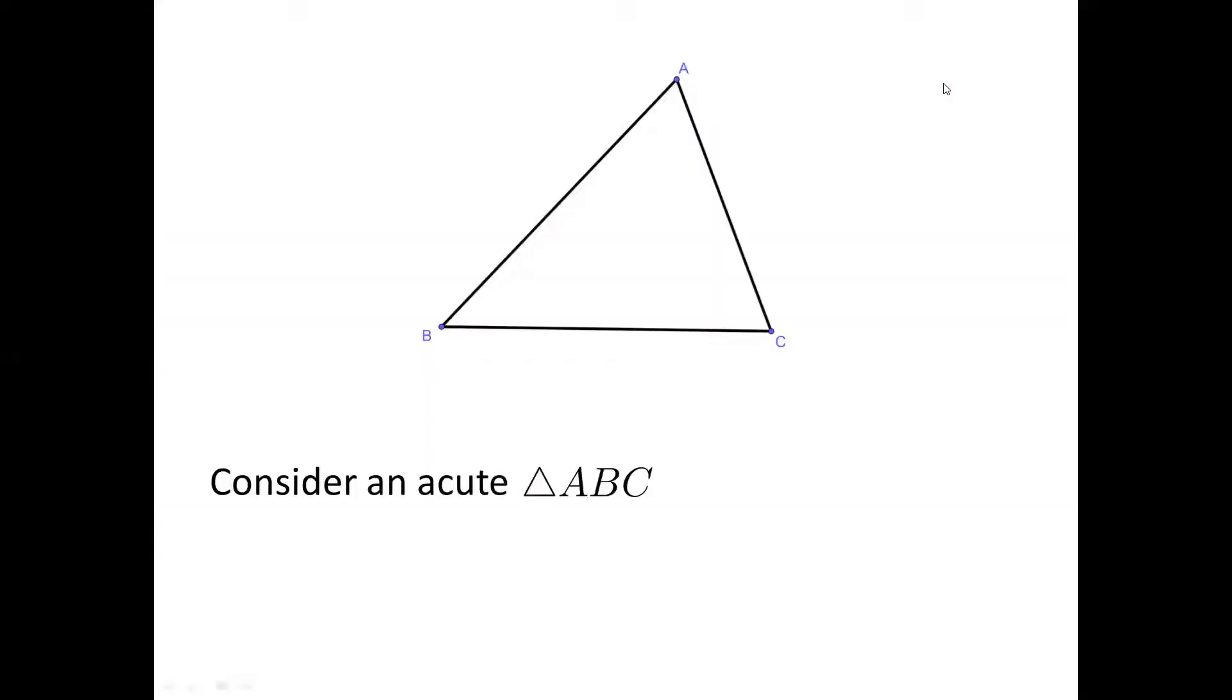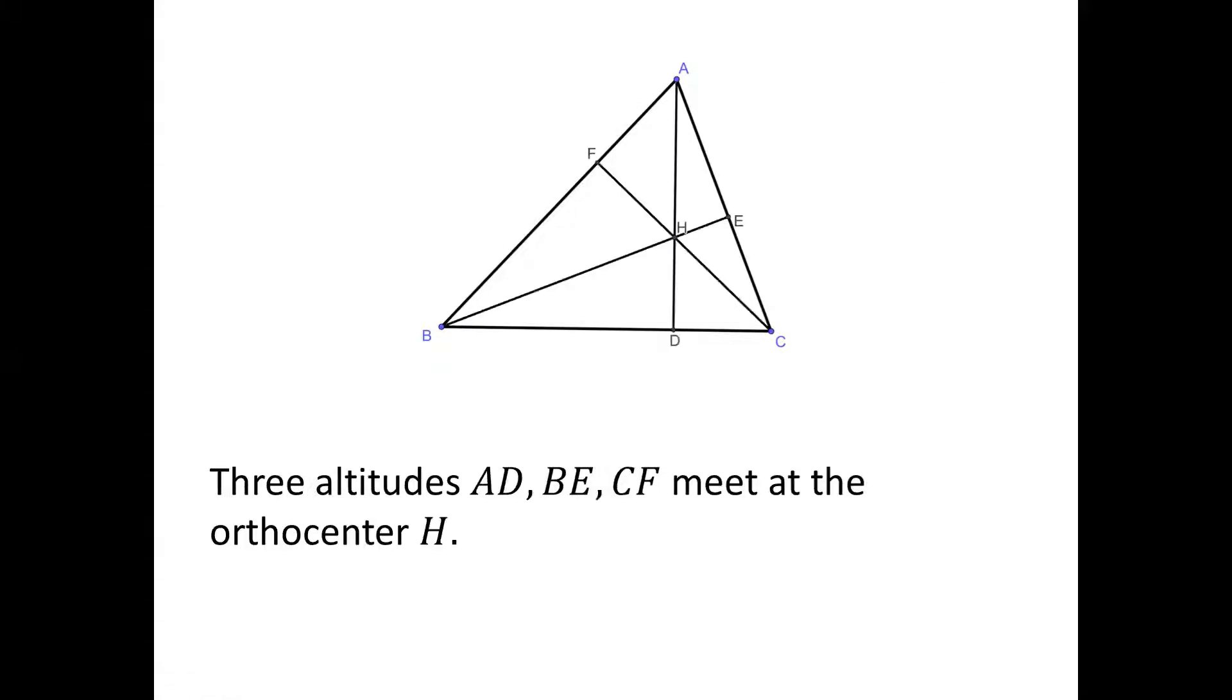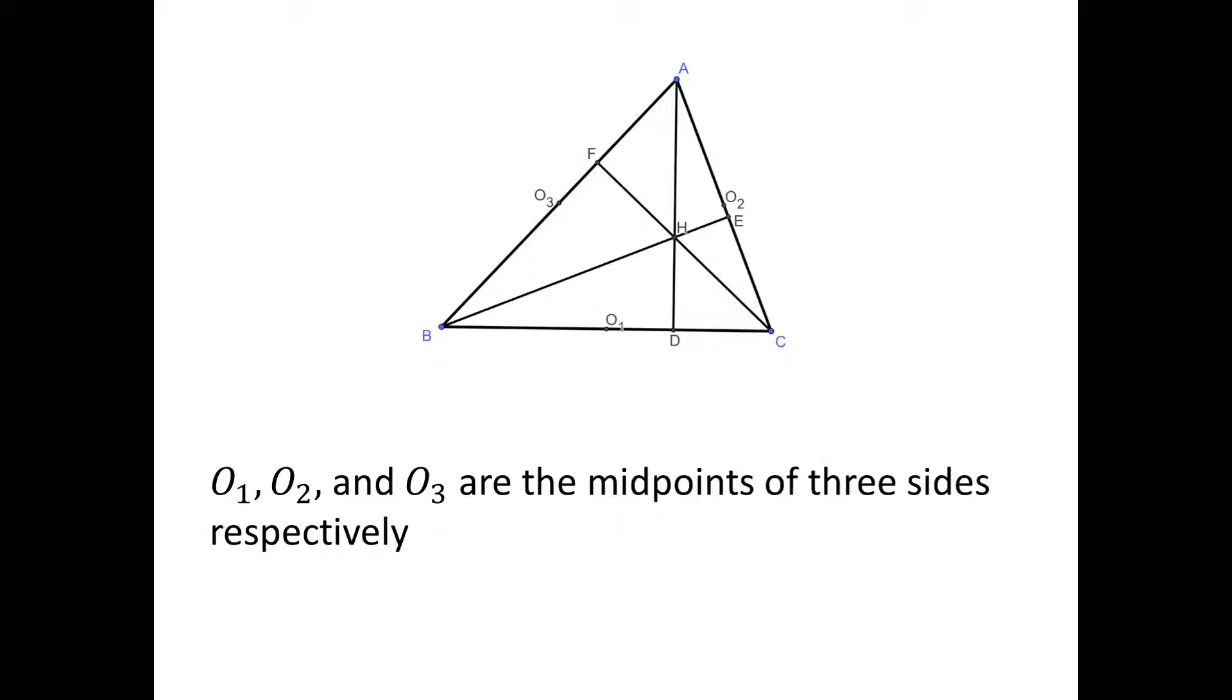Let's look at the problem. Consider an acute triangle ABC. Three altitudes AD, BE, and CF meet as orthocenter H. Let O1, O2, and O3 be the midpoints of BC, CA, and AB respectively.